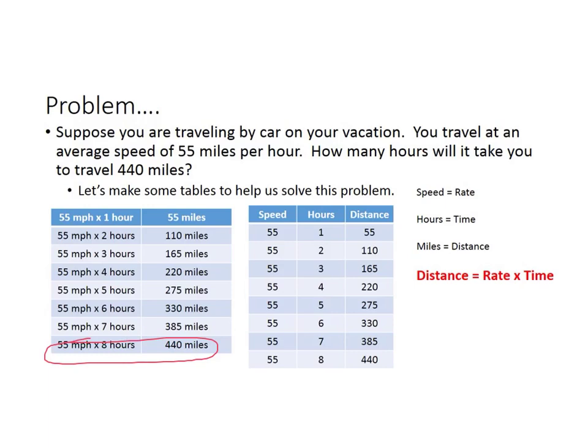Now the second table breaks it down into its different categories. The first column we have your speed, which remains consistent at 55 miles per hour. Obviously this is not me on vacation because I tend to speed a little bit more than that, but this is a good driver doing 55 miles per hour consistently. The second column is your hours, and that goes up one, two, three, and so on to eight. Now look at the distance.